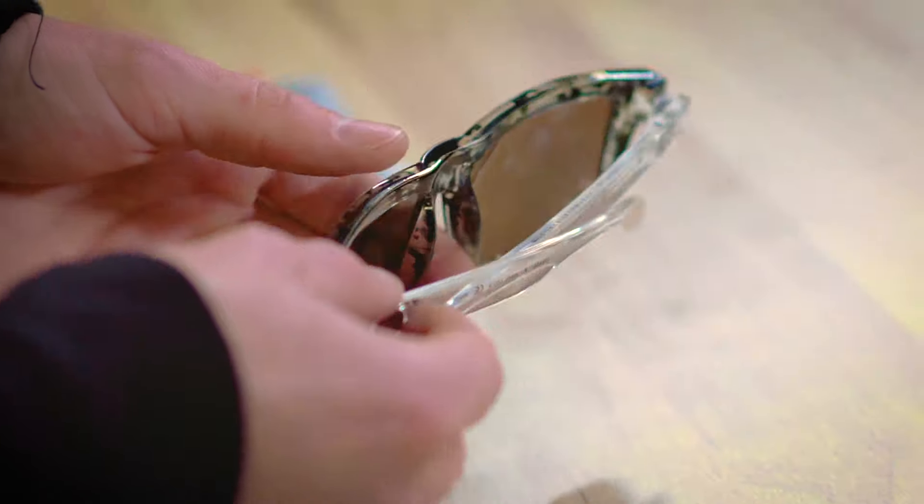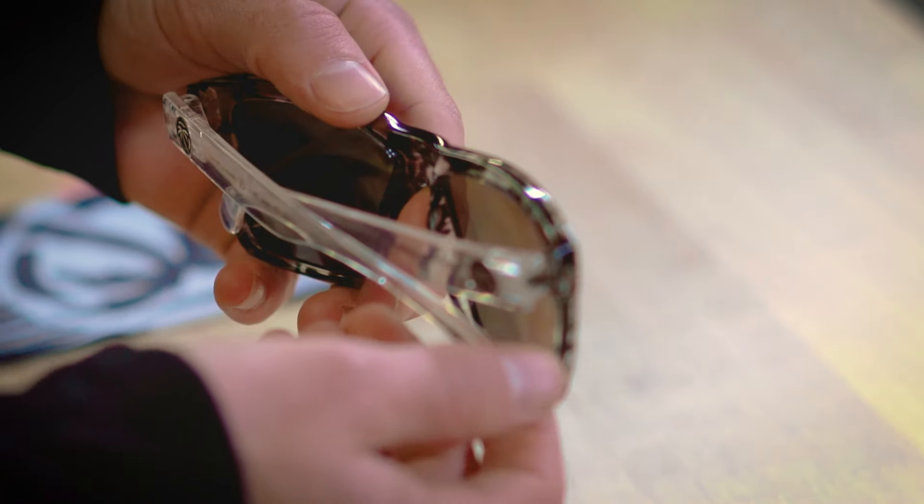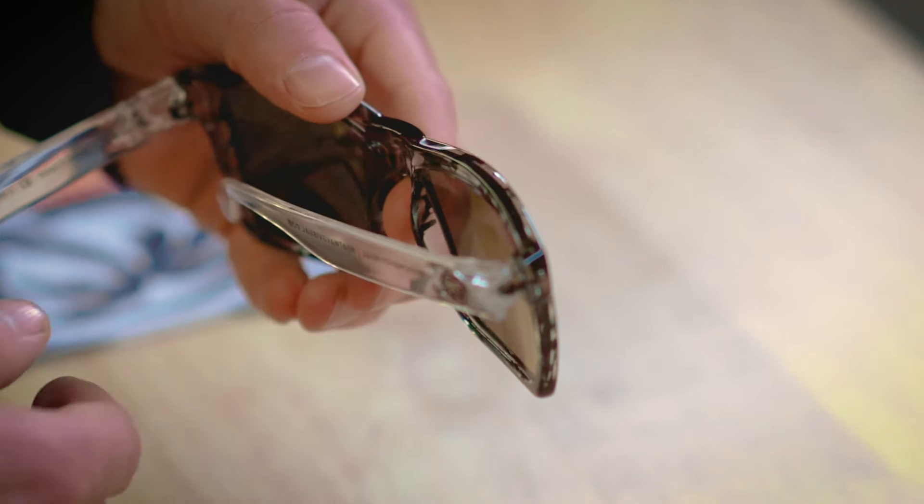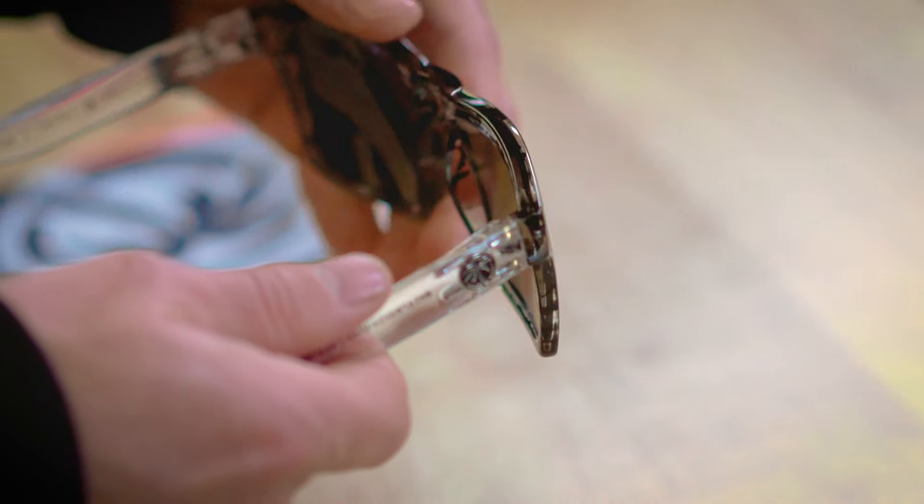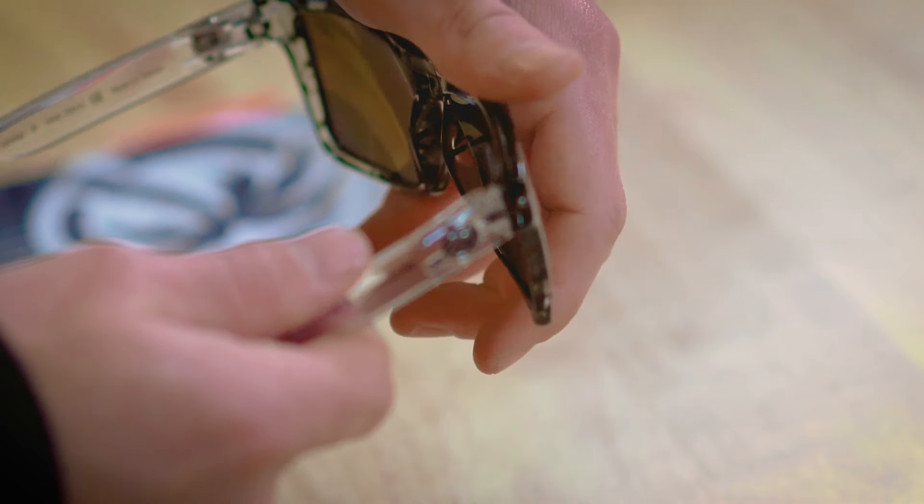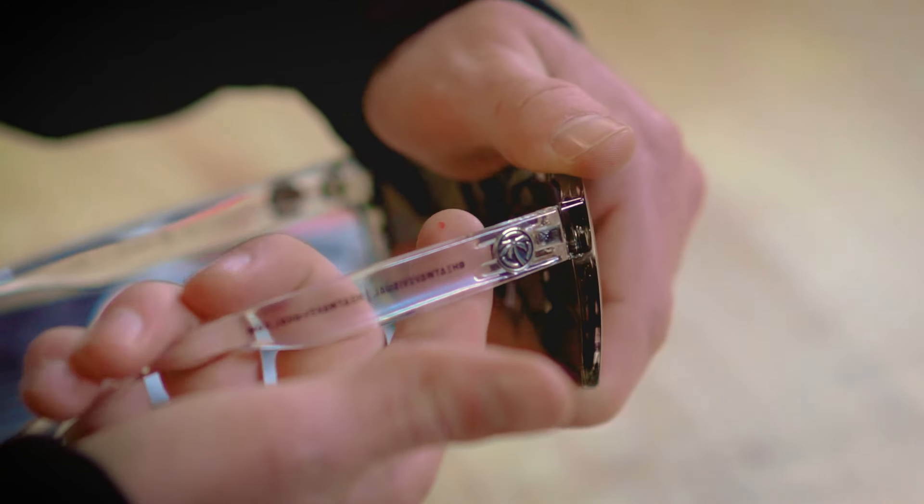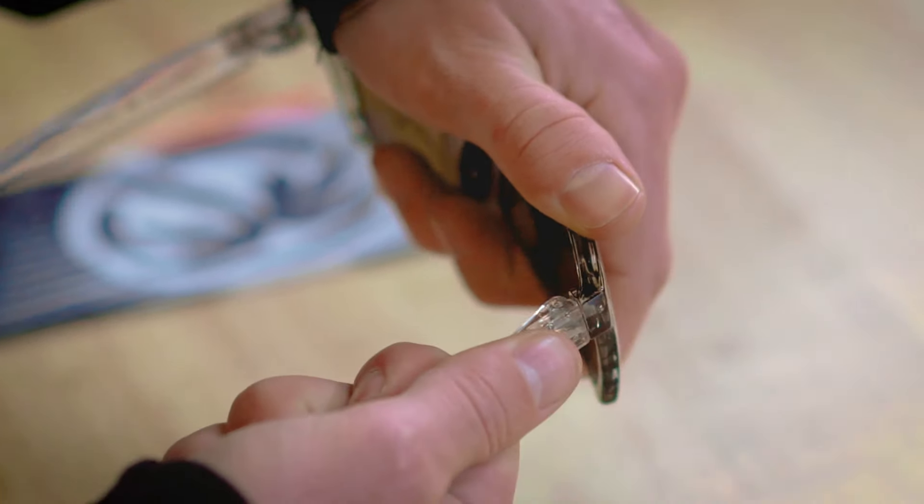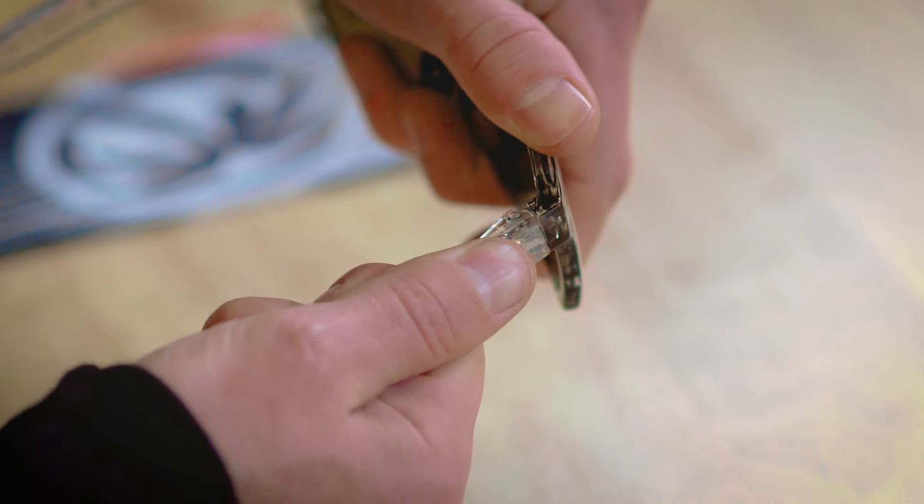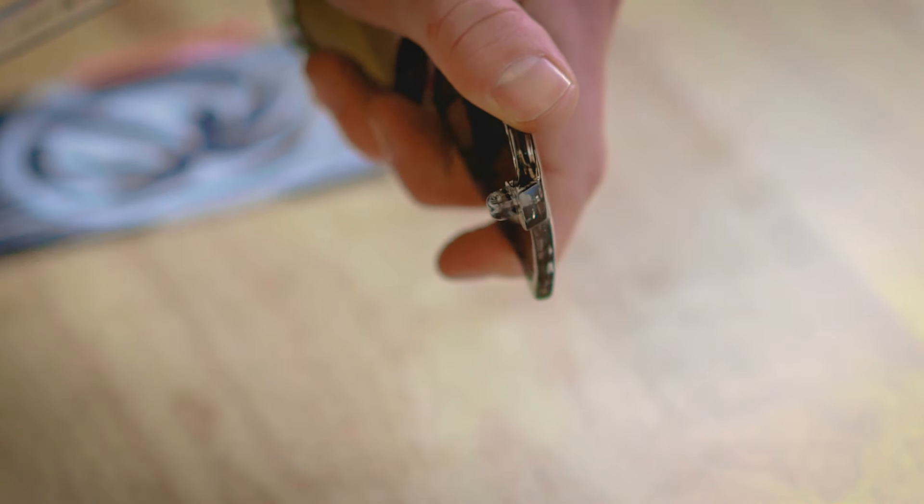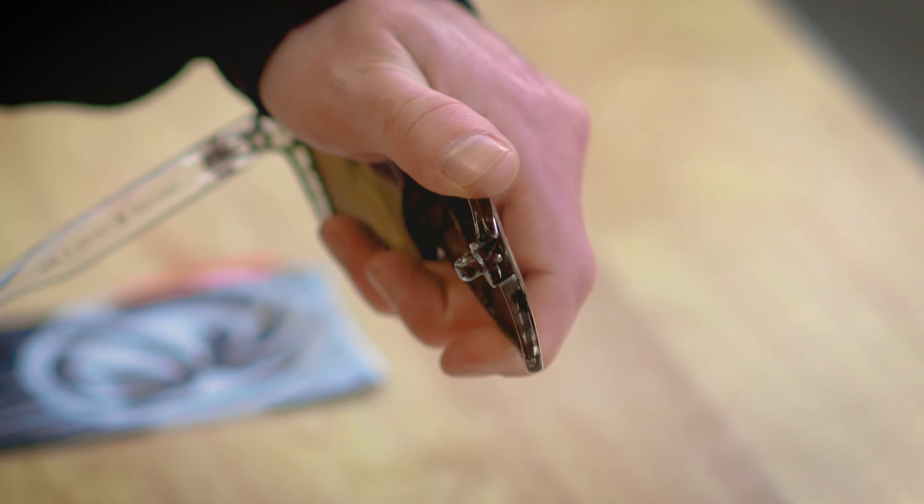The first step to removing the arms is to turn the frames facing away from you, then extend the arms fully out. With your non-dominant hand, hold the frames and get a good sturdy grip. With your dominant hand, put your thumb over the emblem as a marker. Then do a turning motion and pull out, and the arm will come off.